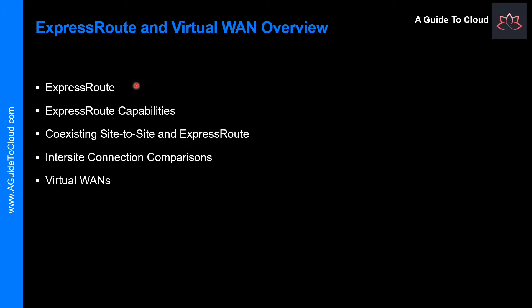Let's have a look at the high-level things what we're going to learn on this video. We will learn about what is ExpressRoute and what are its capabilities, and what do you mean by co-existing site-to-site and ExpressRoute for you or your customer, and some of the inter-site connection comparisons. And we will finally finish off with the Virtual WANs.